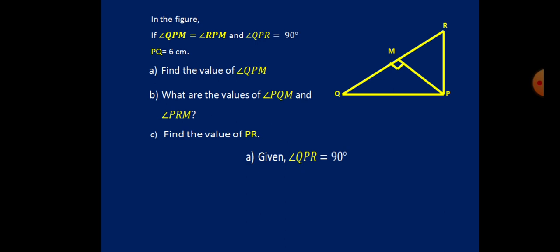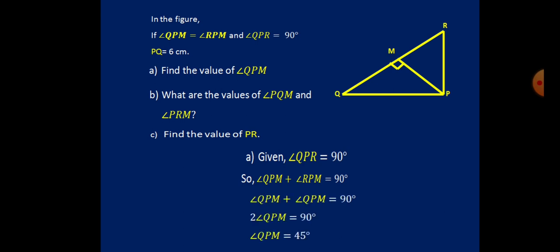For part one: angle QPR is 90 degrees. We can split it as QPM plus RPM. Since QPM and RPM are equal, we replace RPM with QPM. So QPM + QPM = 2·QPM = 90 degrees, which gives angle QPM = 45 degrees.